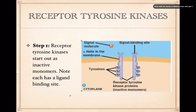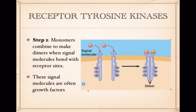In step two, two signal molecules are required to cause the two tyrosine kinases to bond together and form a dimer — they're no longer monomers. This forms a double molecule, or dimer, and causes a conformational shape change that allows them to be activated and eventually signal the cell.